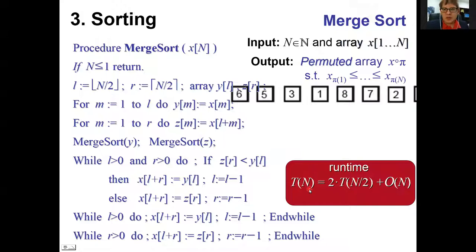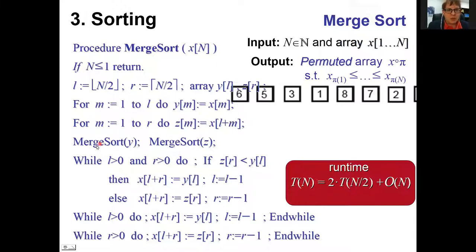Here's the recurrence for this recursive algorithm — the benefit of recursive algorithms is that we can set up a recurrence and apply the master theorem. The algorithm makes two recursive calls, each on subarrays of half the size, plus linear overhead for creating the two subarrays.